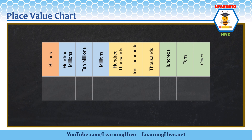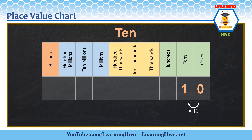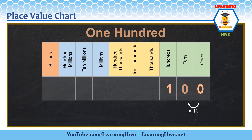Let's put 1 in the ones place and keep moving to the left to find its new values. In the ones place, 1 is 1. Here, 1 has a value of 10 — 10 has one zero. Here, 1 has a value of 100 — 100 has two zeros.